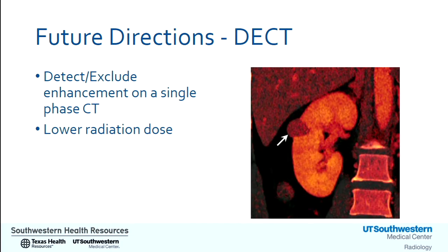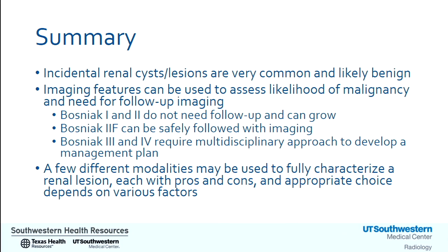Another tool more relevant in the setting of normal renal function is dual energy CT. With this, we can detect or exclude enhancement on a single-phase CT, meaning lower radiation dose for your patients. In summary: incidental renal cystic lesions are very common. Imaging features assess likelihood of malignancy and need for follow-up. Bosniak 1 and 2 cysts do not need follow-up and can grow. Bosniak 2F lesions can be safely followed on imaging. Bosniak 3 and 4 require a multidisciplinary approach. Multiple modalities may characterize renal lesions, each with pros and cons, and the appropriate choice depends on various factors. If you have any questions, please don't hesitate to contact us — this is what we do every day.